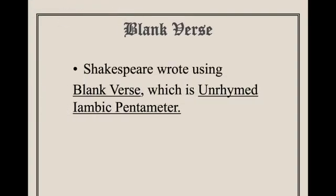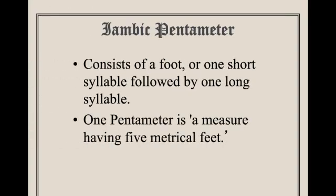Shakespeare wanted to help out his actors, so he had a tendency to use what we know as blank verse. Rather than writing rhymes, he wrote using unrhymed iambic pentameter. Iambic pentameter consists of a foot — one short syllable followed by one long syllable — and pentameter is a measure of five metrical feet. So you have five short syllables each followed by five long syllables, for a total of 10 syllables.